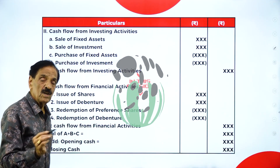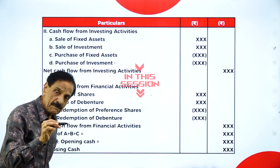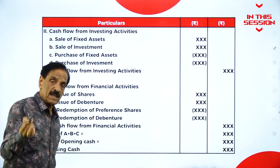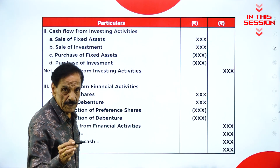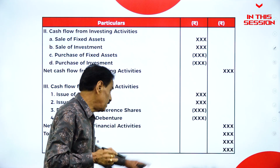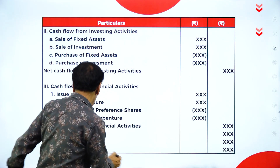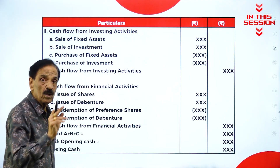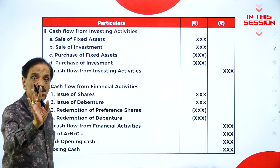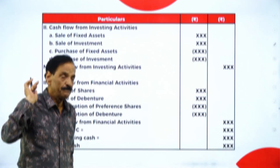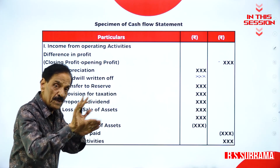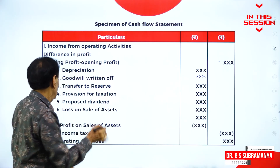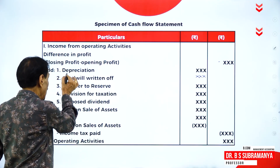Add three activities: operating activity, investing activity, and financial activity. Add opening cash — it should be equal to closing cash. Closing profit minus opening profit.